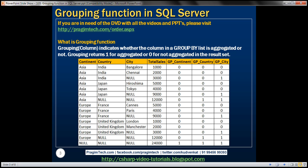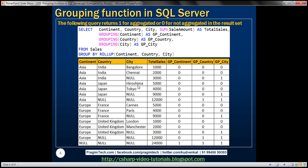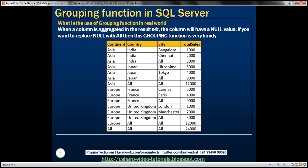The next obvious question is: what is the real-world use of the GROUPING function? When total sales is aggregated, the result set will display null values by default. From the end user perspective, null doesn't make sense. Instead, displaying a word like 'All' or 'All Cities' is more meaningful. When you see 'All' there, the user understands this total is for all cities in India country in Asia continent, and the grand total row clearly means all cities, all countries, and all continents.